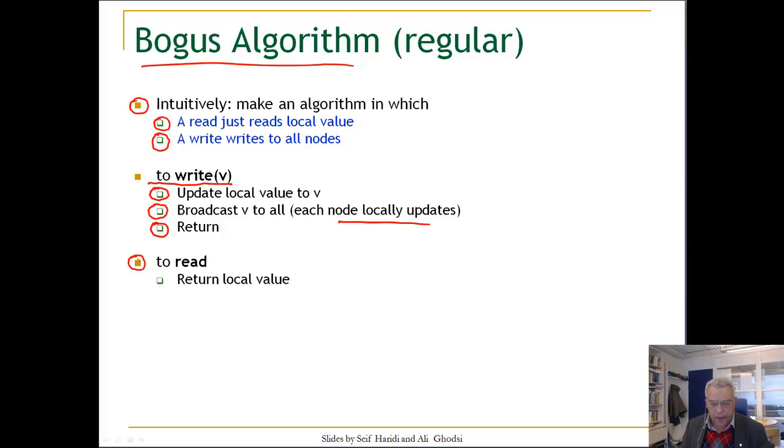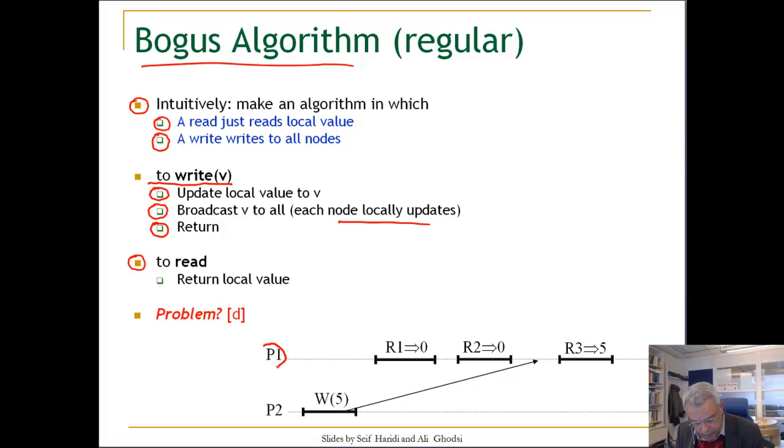It does not satisfy the regular register specification. Let's look at a scenario. Here are two processes, P1 and P2. The writer starts the algorithm. It broadcasts the message, but then it immediately terminates after starting the best-effort broadcast operation. But the delivery of the message happens here. Process P1, if it performs a read operation that comes after the completion of the write, will return the old value of the register, and that violates the specification of the regular register because the reader has to return the last value written.